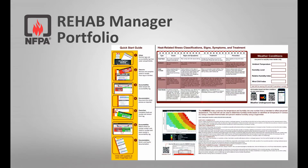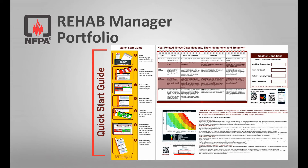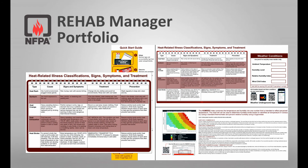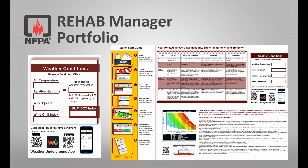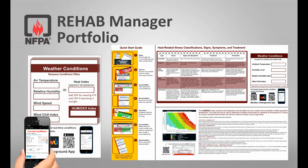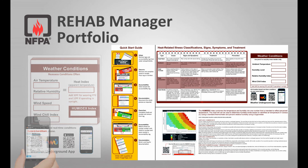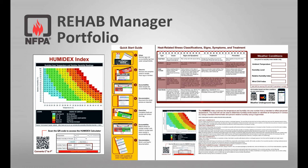The lower reference sheet provides a simple quick-start guide to allow any resource assigned to the rehab manager position to perform the check and release functions effectively. A heat illness reference box identifies the five types of heat illnesses and their symptoms. Sticky note-style pads of weather conditions ensure rehab procedures match the environment. A smartphone QR code provides quick access to current local conditions if a weather station is not available, and a Humidex index and QR code calculator to convert Celsius to Fahrenheit.